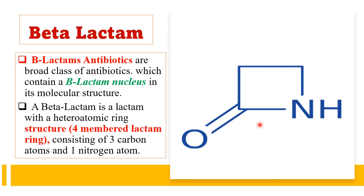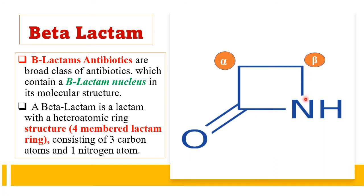A heteroatom is defined as an atom other than carbon or hydrogen. In the case of beta-lactam, nitrogen is the heteroatom. In the chemical structure of the beta-lactam ring nucleus, the carbonyl carbon, alpha carbon, and beta carbon are present. The beta carbon is directly bonded with the nitrogen atom — that is why this ring nucleus is termed the beta-lactam ring nucleus.